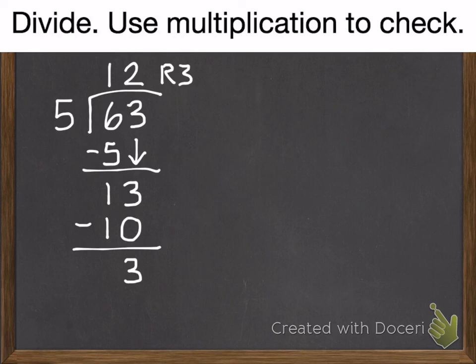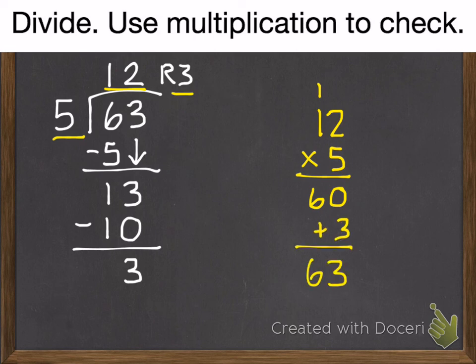Check our work. 12 times 5. 5 times 2 is 10. 5 times 1 is 5, plus our 1 is 6. Add in our 3 remainder, and we get 63. So your answer is 12 remainder 3.